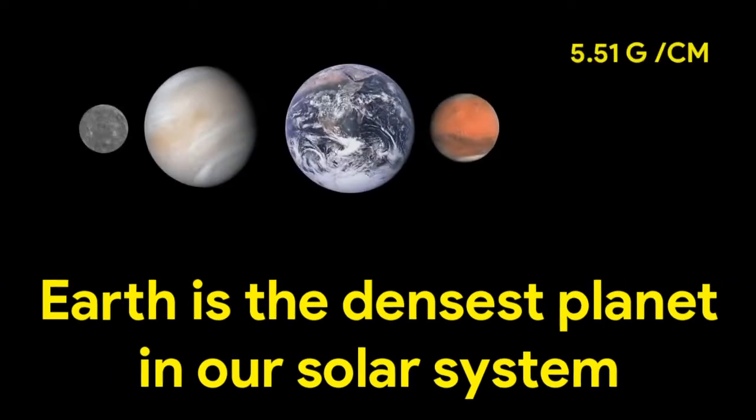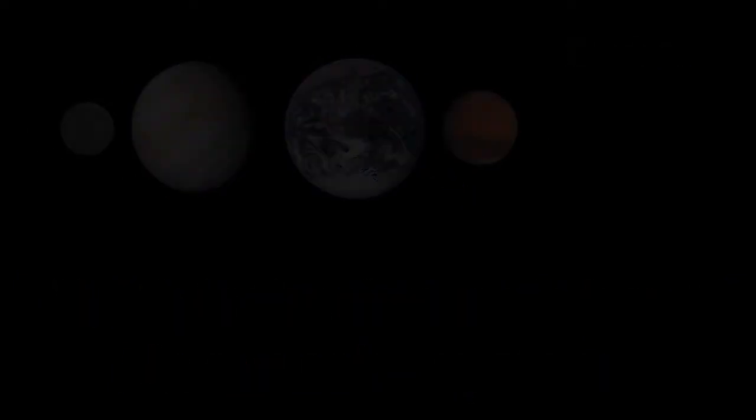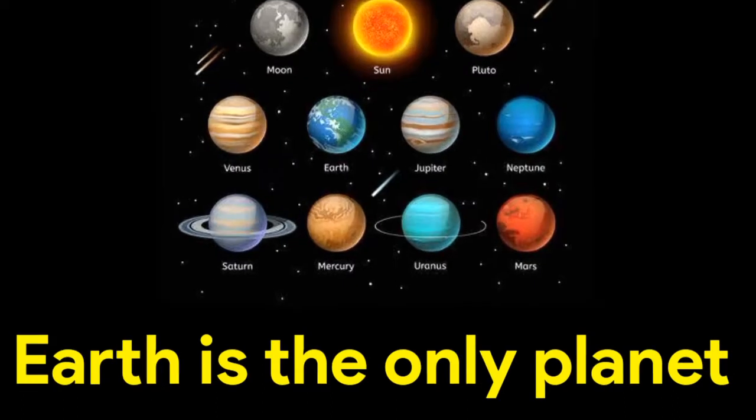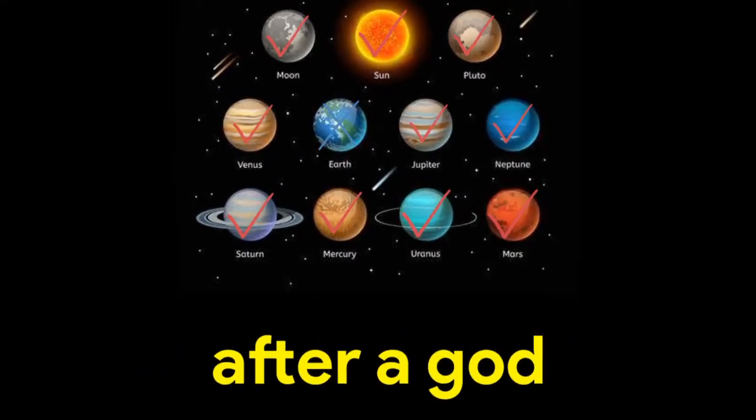Earth is not perfectly round. Earth is the densest planet in our solar system. Earth is the only planet that is not named after a god.